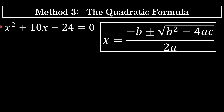In this equation, a is 1, b is 10, and c is negative 24. The signs, of course, are very important. Substituting 1 for a, 10 for b, and negative 24 for c will give us the solutions to this quadratic, which we know to be negative 12 and 2. Let's go through the process of doing so.